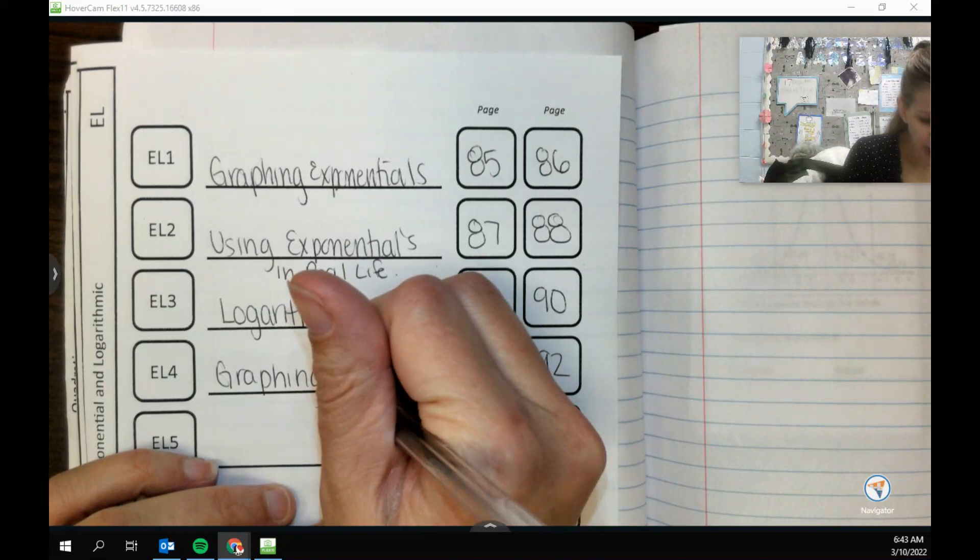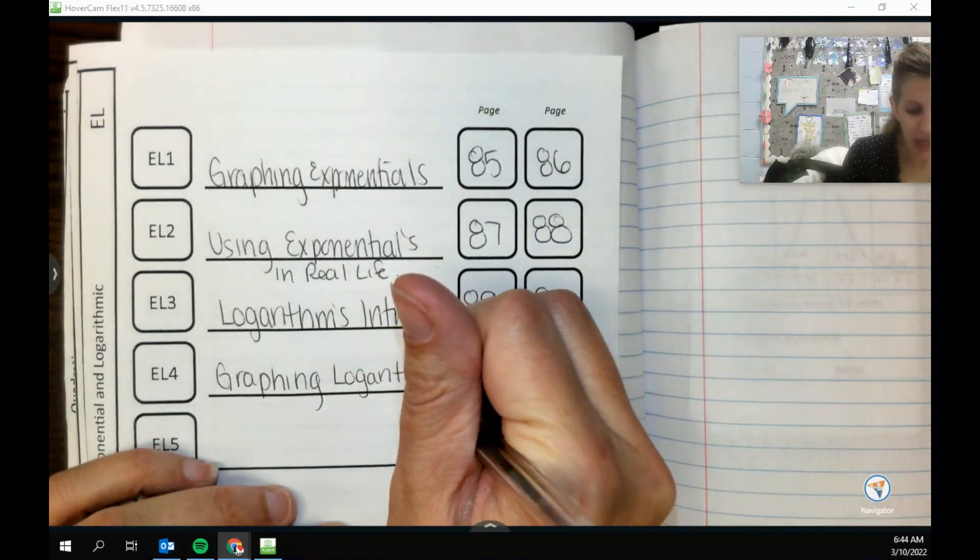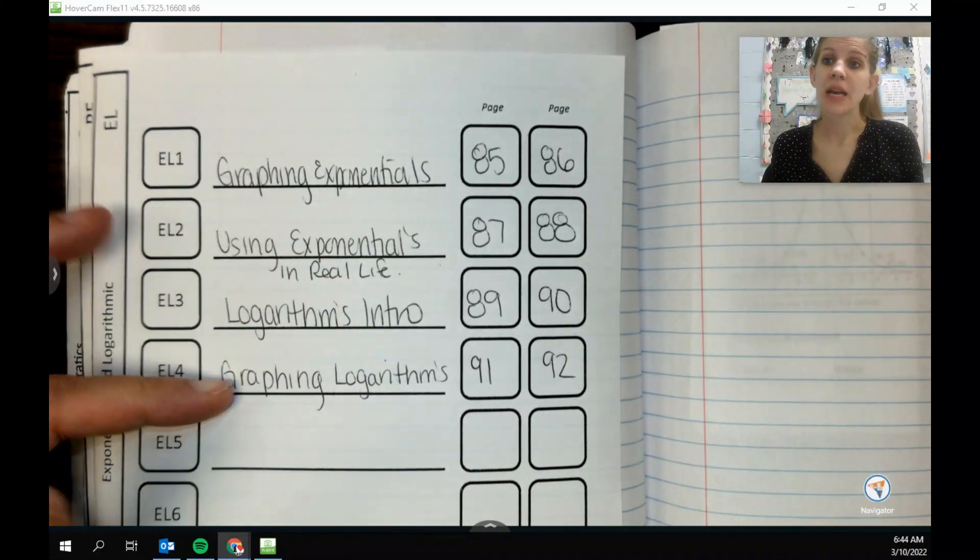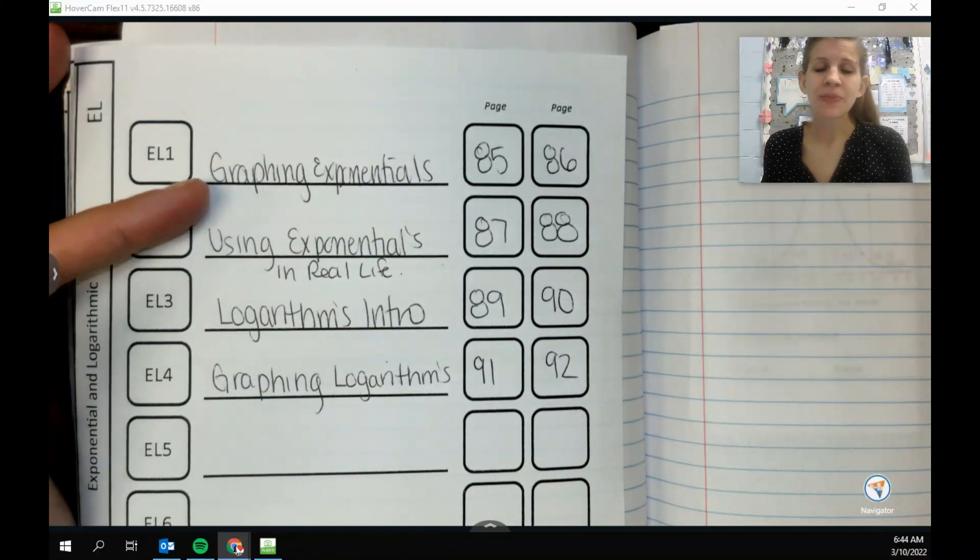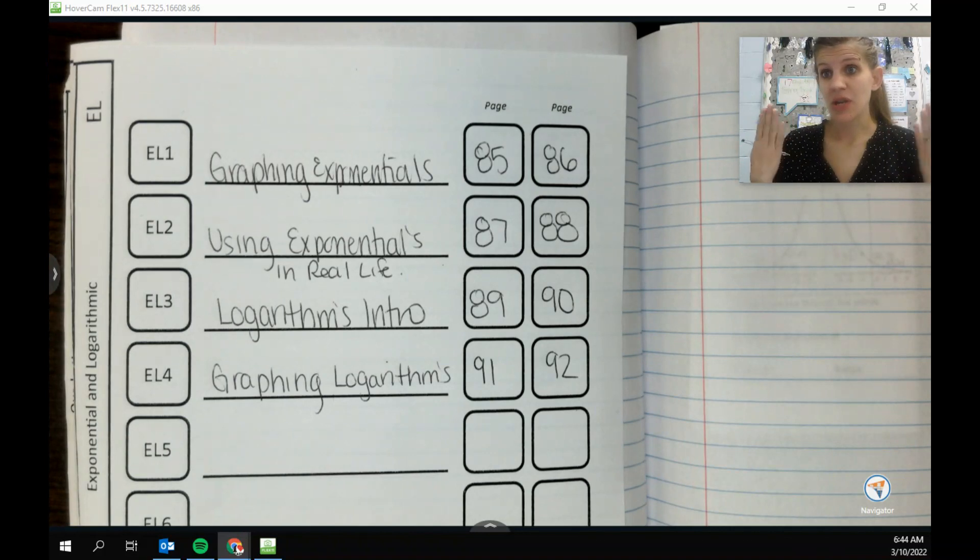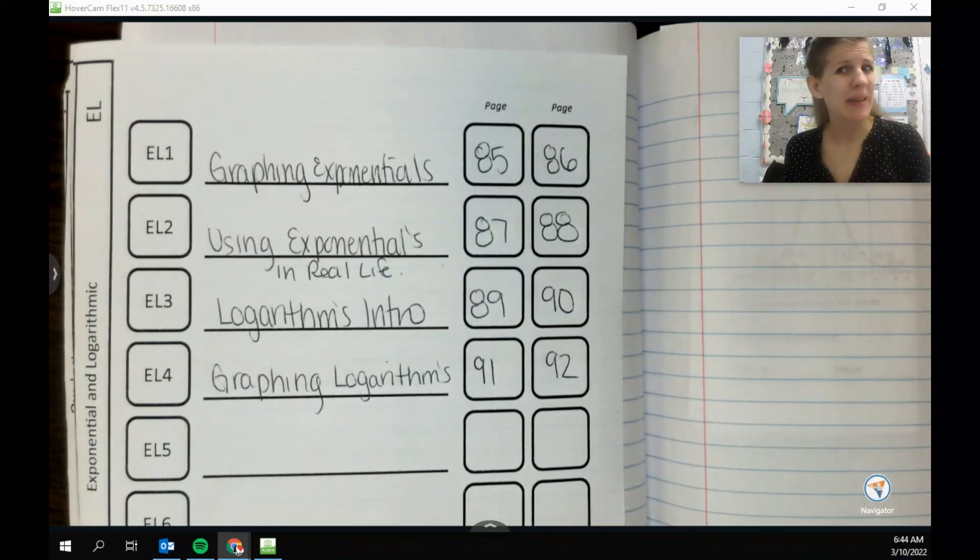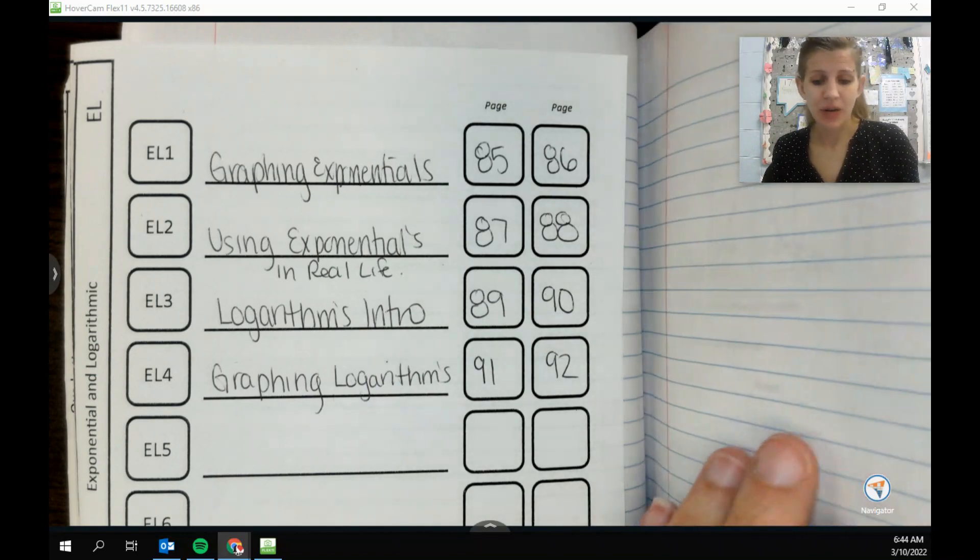So graphing logarithms. The super nice thing about graphing a logarithm is because a logarithm is the inverse of an exponential, and inverses just swap x and y, we kind of already know how to do this because we already understand how to graph an exponential. A logarithm is going to be basically the same thing, we just have to swap the x's and y's.